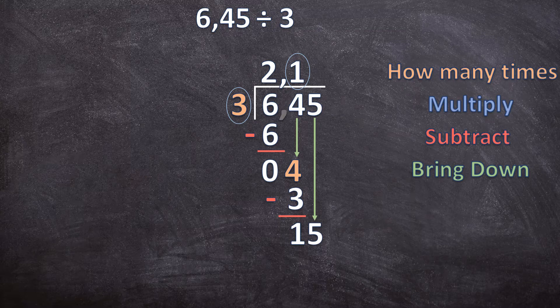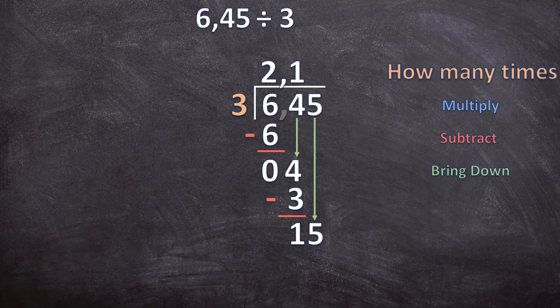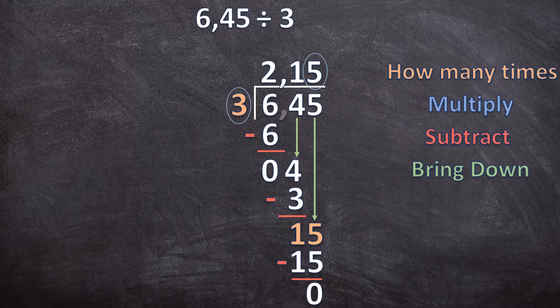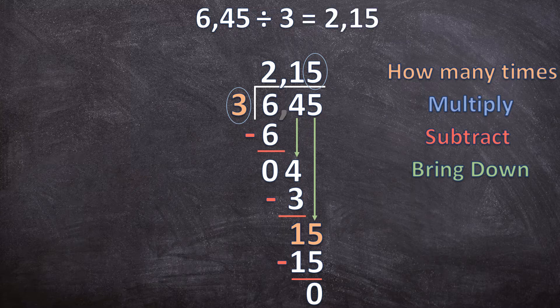Our first question now: how many times does three go into fifteen? Three goes five times into fifteen. Now we multiply: five times three is fifteen. Now we subtract: fifteen minus fifteen is zero. The last step is bring down, but there's no digit left to bring down and our long division ended with a zero, so this is where we stop. Our answer for 6,45 divided by three is exactly 2,15.